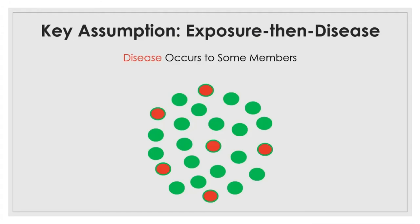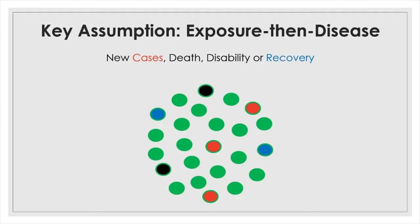Once disease occurs, the possible outcomes are the following: either recovery, disability, or even death, depending upon the resilience of the person, the type of disease, or environmental factors. The major goal of the analytic study is to find out the relationship between exposures to certain risk factors in question and the occurrence of a certain disease.